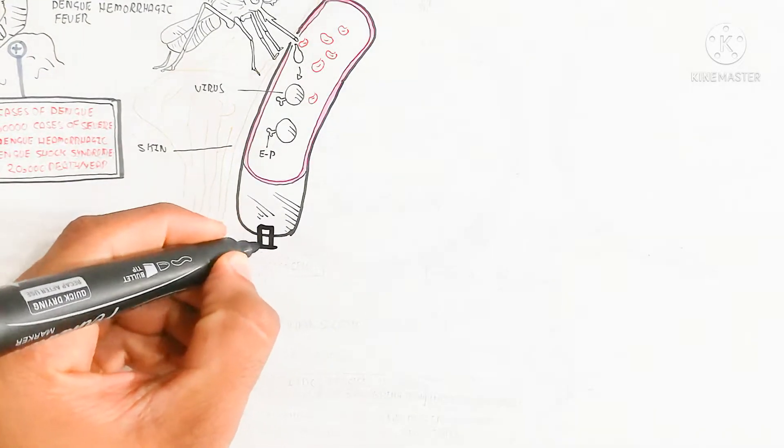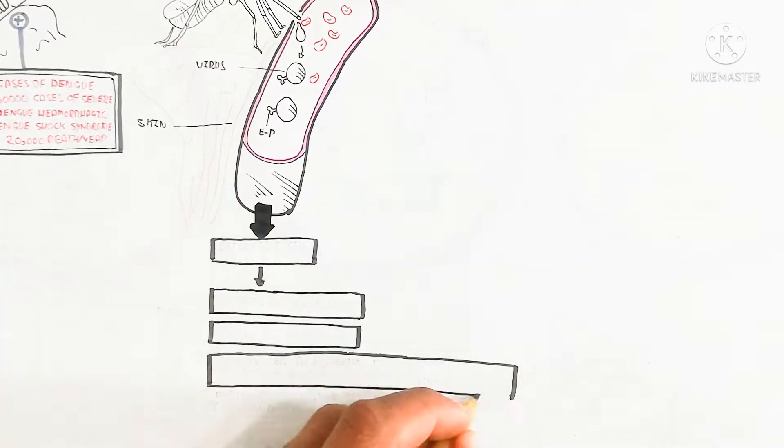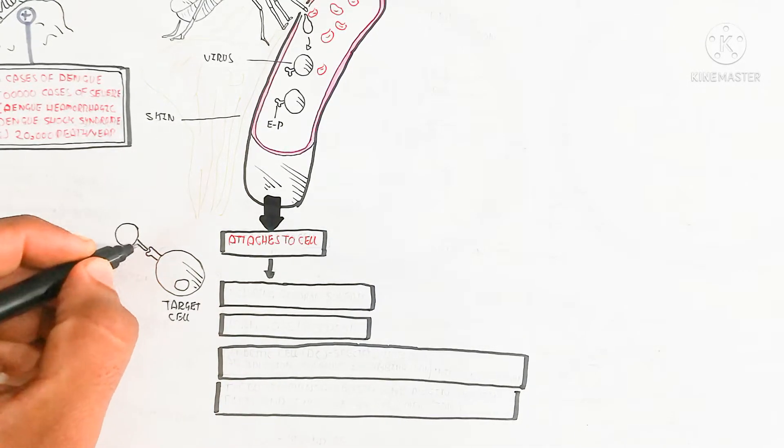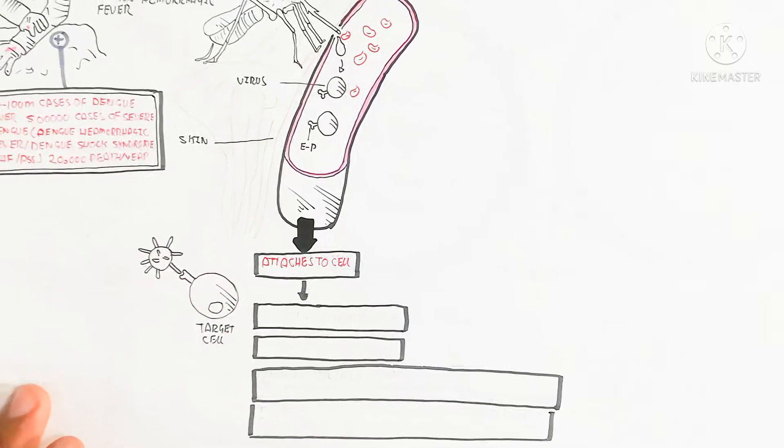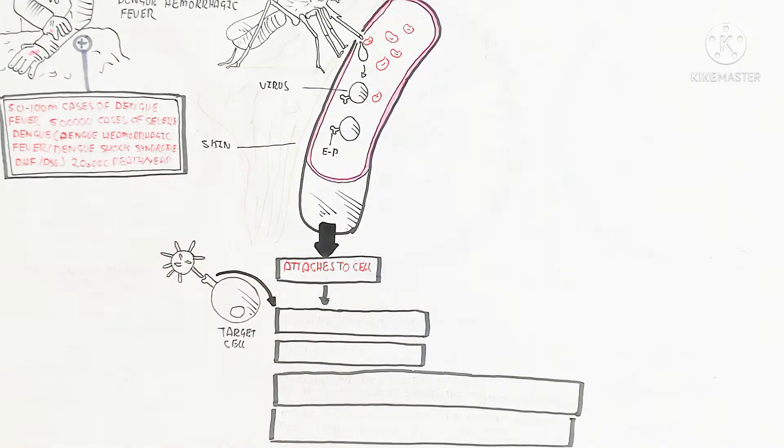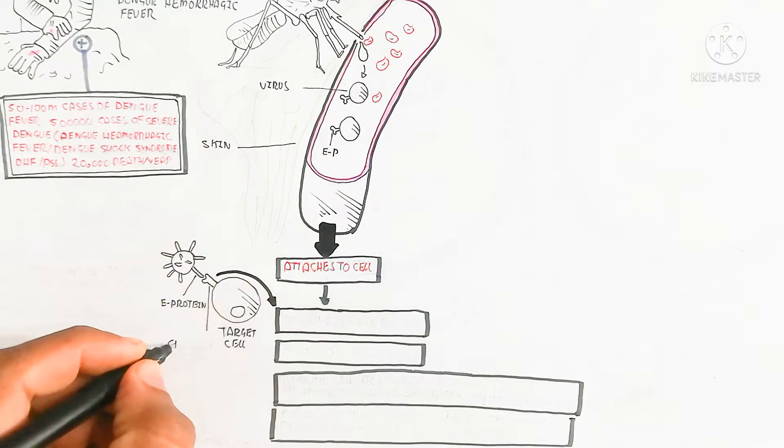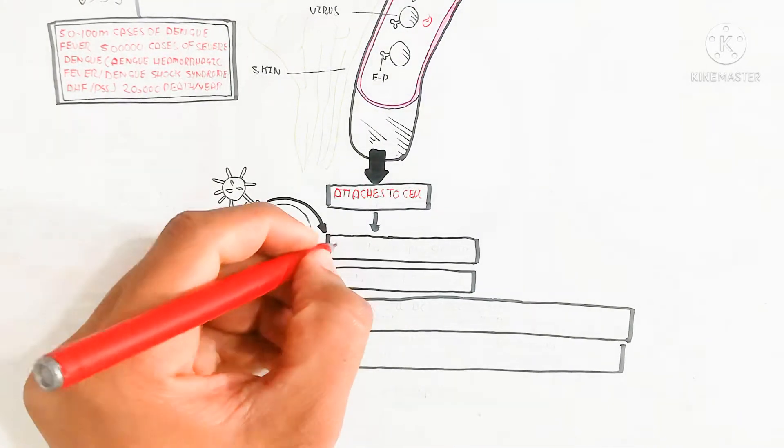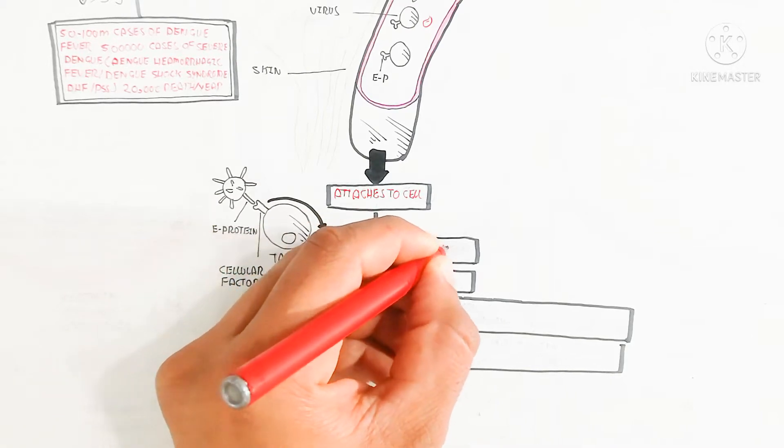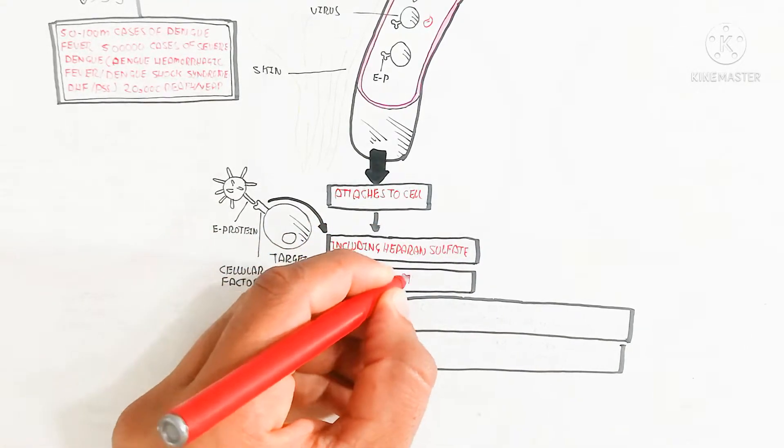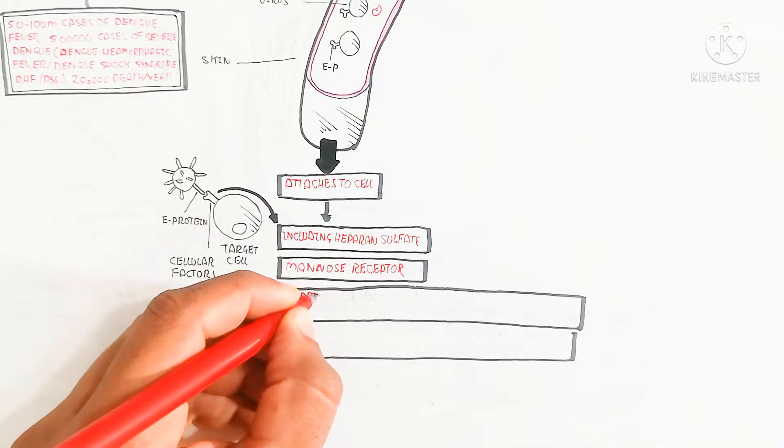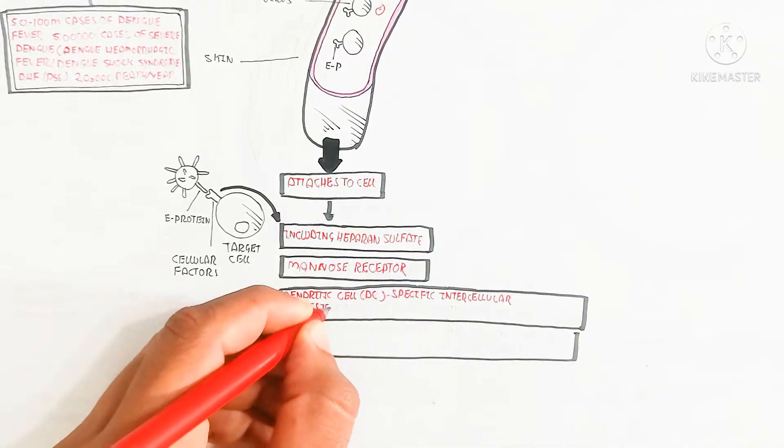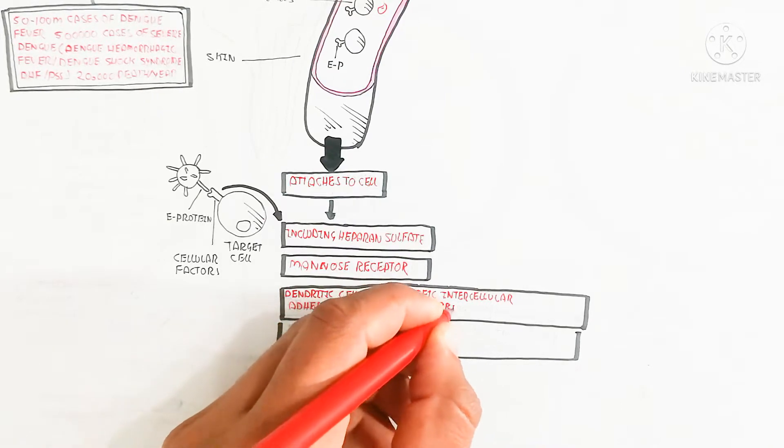Here is the cell. When infection from the skin moves into the artery or veins, it contains E protein. The E protein attaches to the target cell, which can be the dendritic cell or other cells like skin cells. The E protein binds with cellular factors and targets the cells. Cellular factors include heparin sulfate, mannose receptor, and dendritic cell-specific intracellular adhesion molecules.